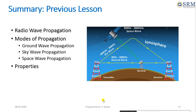In the previous lesson, radio wave propagation, different modes of propagation and properties were covered. Three propagations are discussed: one is ground wave propagation, second is sky wave propagation, and third is space wave propagation.